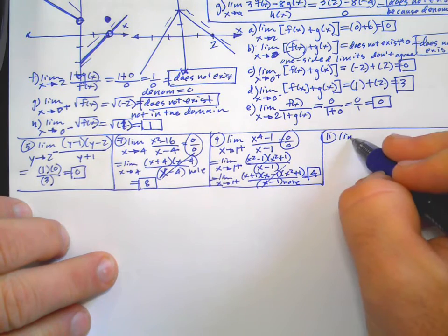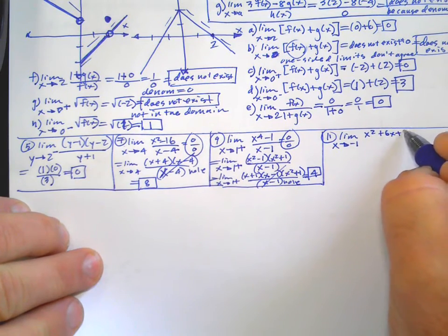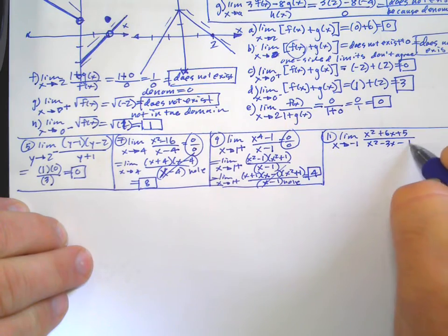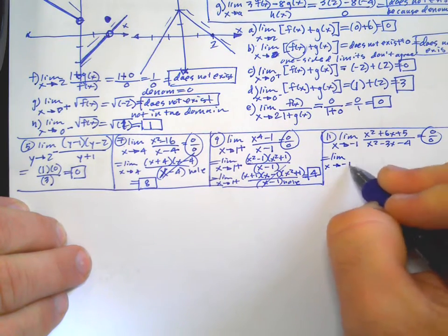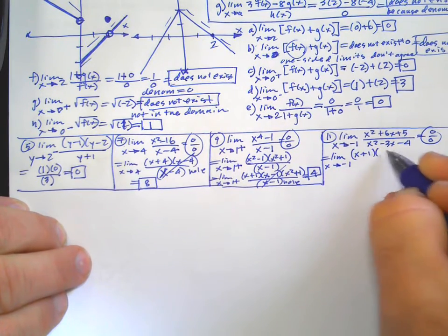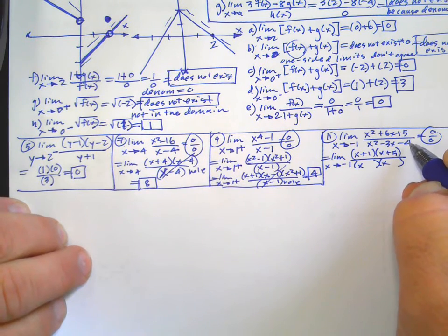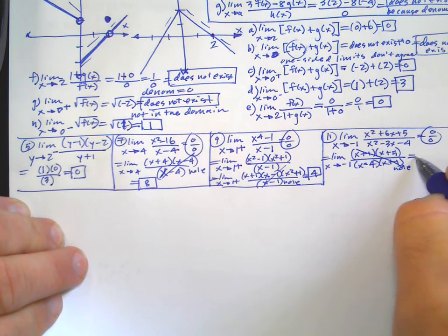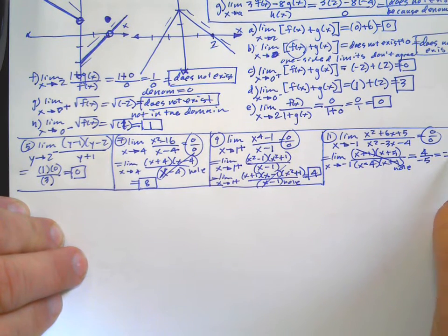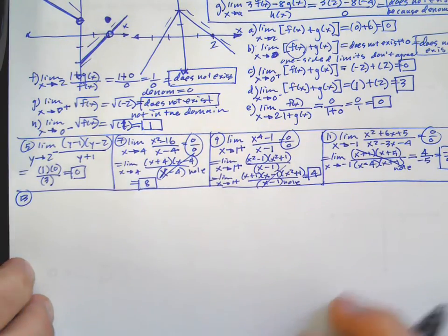Number 11: limit as X approaches negative 1 of (X squared plus 6X plus 5) over (X squared minus 3X minus 4). That's 0 over 0, so we're going to try and factor the hole out. Factor the top: (X plus 1)(X plus 5). Factor the bottom: the numbers that multiply to get negative 4 and add to get negative 3 are minus 4 and plus 1 — so (X minus 4)(X plus 1). There's the hole. Plug negative 1 in: we get 4 over negative 5, so negative 4 fifths.